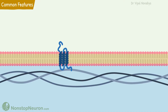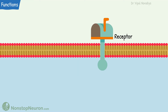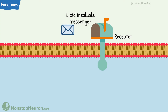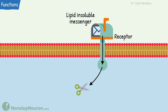Now the functions of membrane proteins. First, they can serve as receptors. Lipid-insoluble signal molecules cannot pass through the membrane; they relay their signal to membrane receptors, which in turn transmit it to the interior of the cell. For example, the alpha-1 receptor of adrenaline in smooth muscles of arterioles — by stimulating this receptor, adrenaline orders the cell to contract.